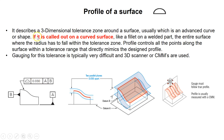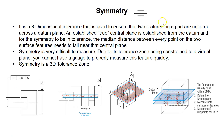Here we also have the term 'call out' — calling out a tolerance means placing a feature control frame (FCF) on a surface, requiring the inspector to come and inspect it and verify it is in spec.